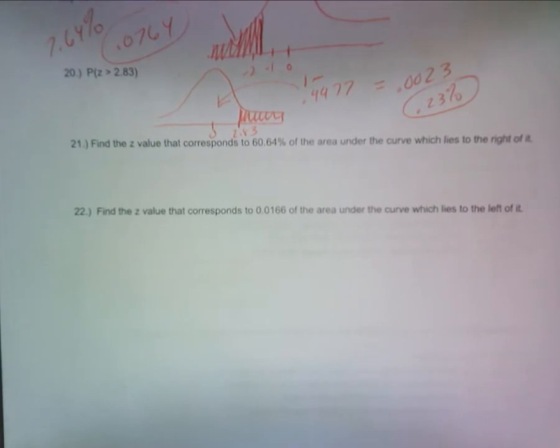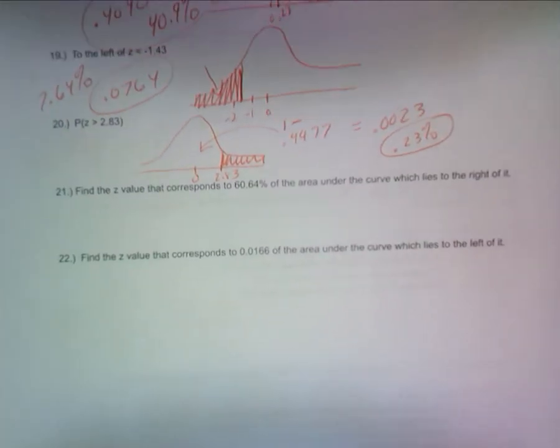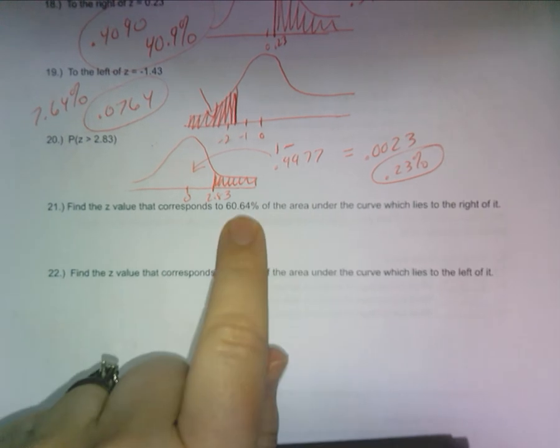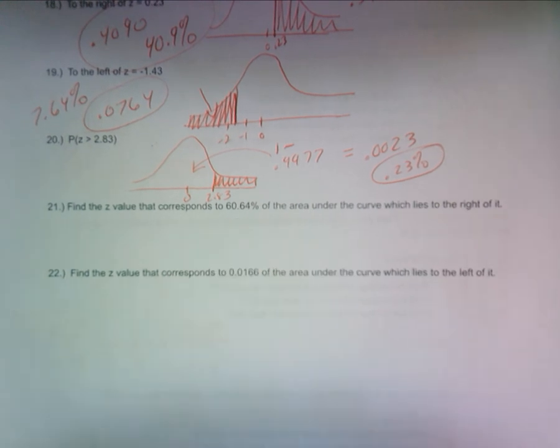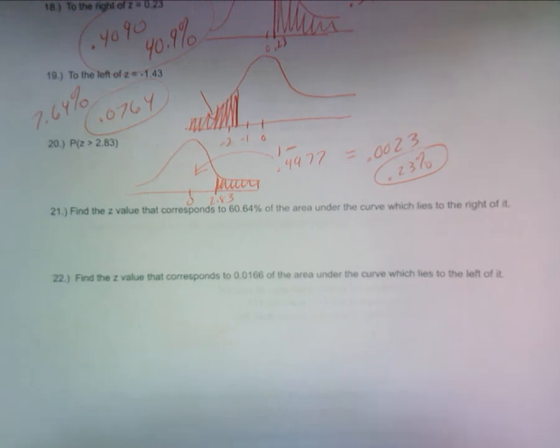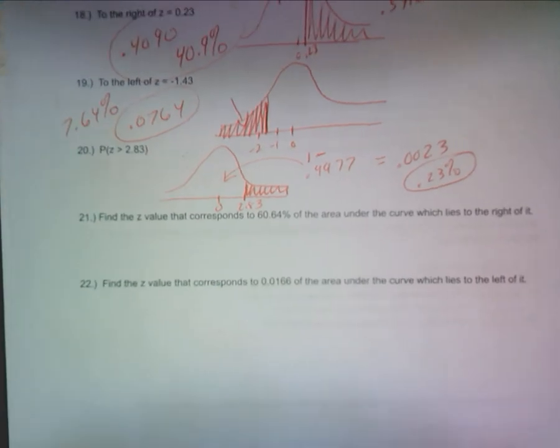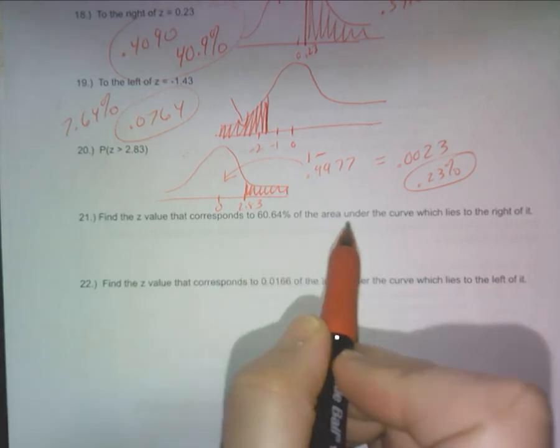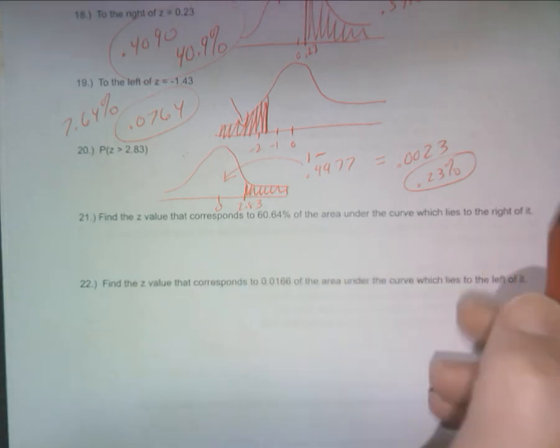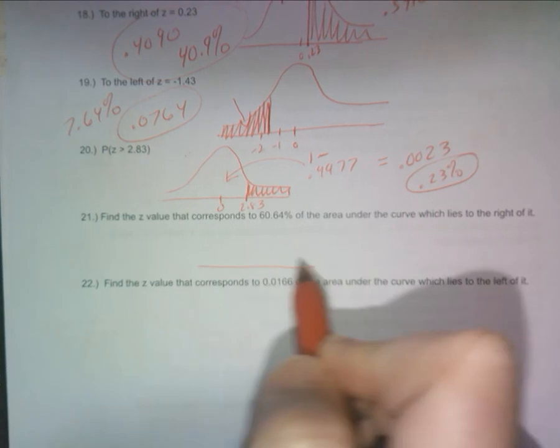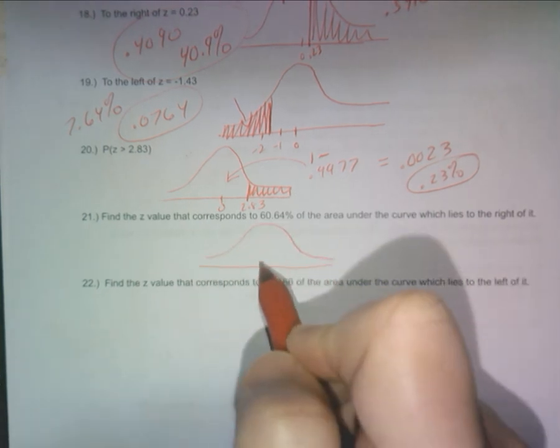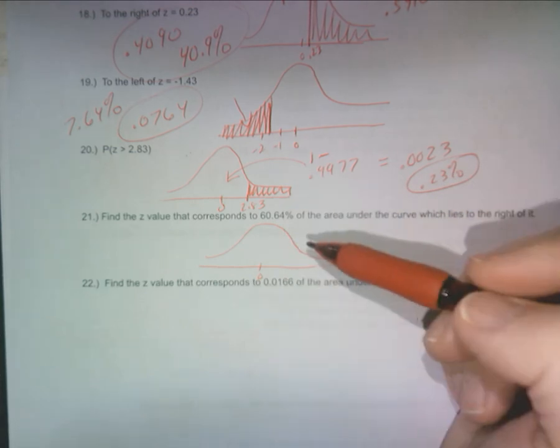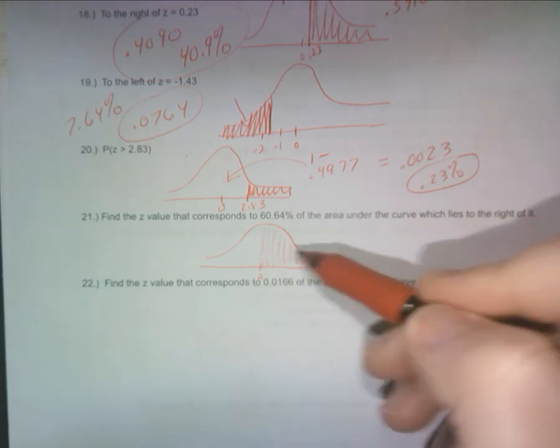All right, and last but not least, this one is, yeah okay, so this is working backwards. We've done this before though. This is where I'm giving you the area, you're finding the z. So let's talk about this and then we're almost done. Listen carefully, you'll have two of them like this. Find the z value that corresponds to 60.64% of the area under the curve which lies to the right. Okay, so here's what I do.